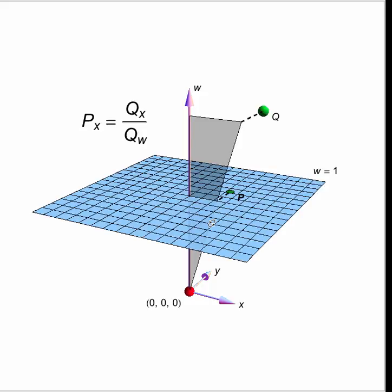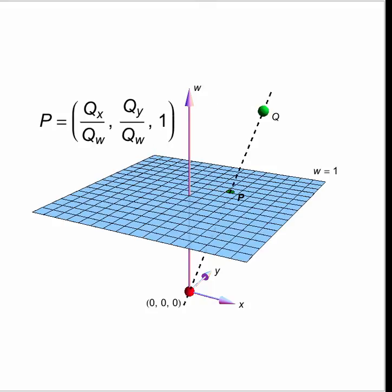And when we do that, we have the same similar triangle situation. And the arithmetic is just the same. We end up with PX equaling QX divided by QW. We can do the same for Y. We can forget about X for a second. We can drop it onto the YW plane. And again, by similar triangles, we get PY is equal to QY over QW. So, putting those together, we know our homogeneous coordinates of P.